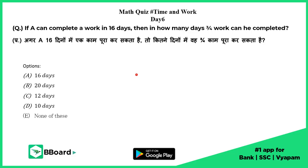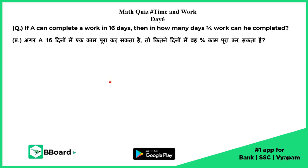Hello students, welcome to bboard. Let us see the solution of Time and Work Day 6. This is our question and these are the options. The question says: A can complete a work in 16 days, meaning A's speed is 1/16.